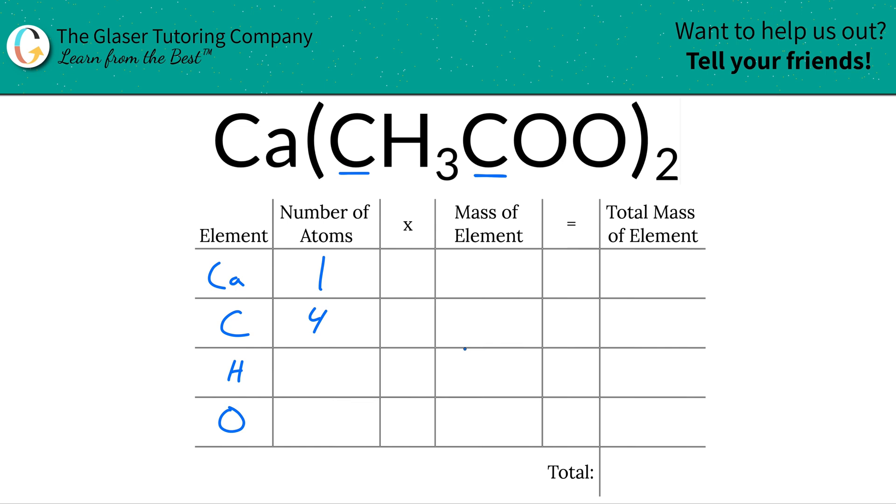For hydrogen, we have three hydrogens here. This represents three hydrogens in a single acetate, but you have two acetates, so there would be a total of six hydrogens. And then for oxygen, in each acetate you have two oxygens, but you have two acetates in total, so that would be a total of four.